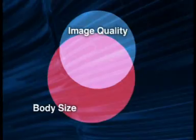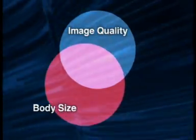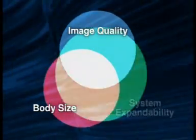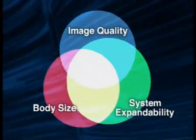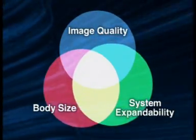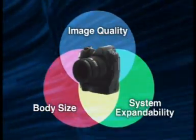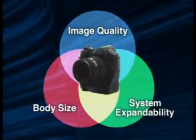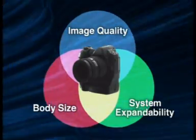As a result, there has been a great search for the best common standard for digital SLR cameras. Here, we would like to introduce the four-thirds system, a new standard for digital SLR camera systems that will achieve the optimal balance between image quality, body size, and system expandability.